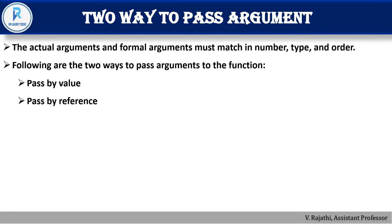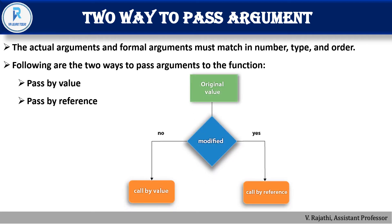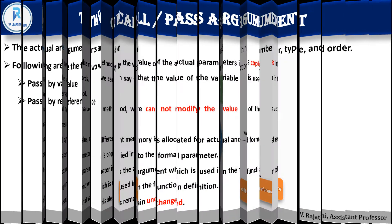Now let's look at two ways of passing arguments. The actual and formal arguments must match in number, type, and order. The two ways are: pass by value and pass by reference. If the original value is modified, it is called by reference; if there is no modification, it is called by value. This is an important distinction to remember.